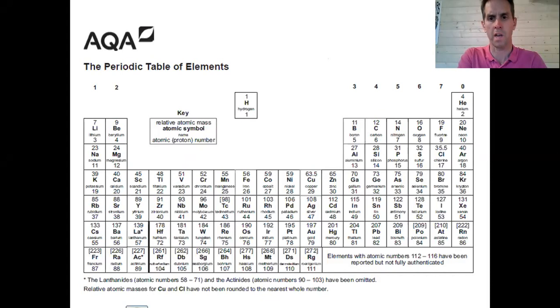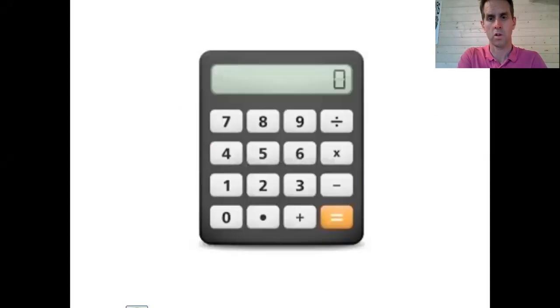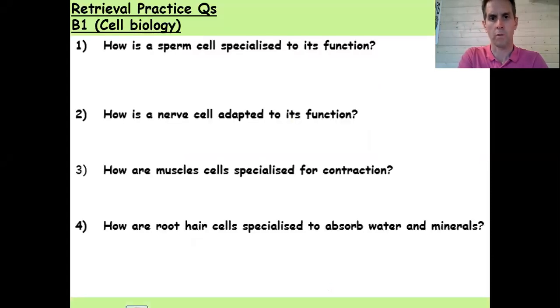You're going to need a periodic table today which was attached to show my homework yesterday and today, so go and get that. You're also going to need a calculator, so get one of those now please. Let's start now with our retrieval.